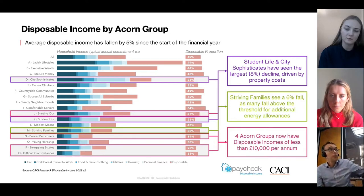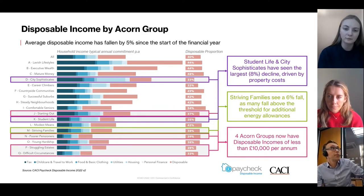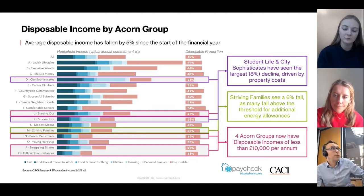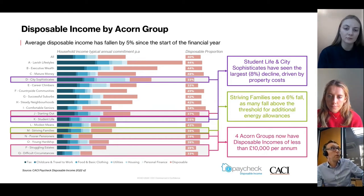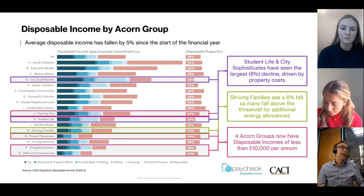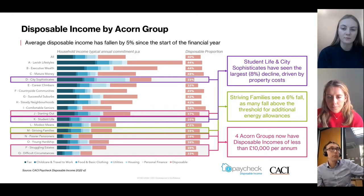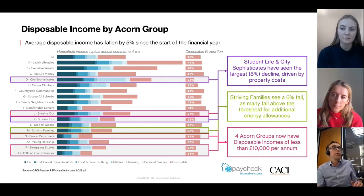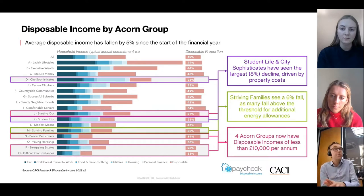We've also seen disproportional effects across different groups. The chart on screen summarizes it — feel free to pause it if you're watching. The salmon-colored piece shows the disposable income portion, and you can see it varies massively. In the world of Mature Money, they've got reasonably good incomes with 48 percent disposable. But working down the Acorn groups to Struggling Estates on much lower incomes, only 28 percent is disposable. Alarmingly, we now have four Acorn groups with disposable incomes of less than £10,000 per year.